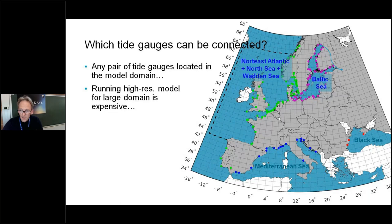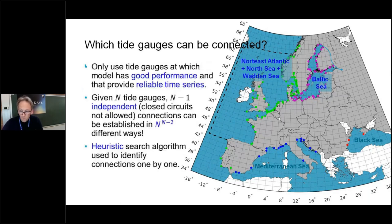For those two models, we have quite a number of tide gauges available, and we only use those tide gauges at which the model has good performance. You have to be aware: many of the tide gauges are in harbors or behind structures, and there you may have very local dynamics that the models cannot resolve. We don't need a model that has good performance everywhere. We also need reliable time series, ideally over longer time periods. Then, suppose we have n tide gauges in a certain model domain, we can only establish n minus one independent connections because we cannot allow closed circles that would cause problems in the adjustment.